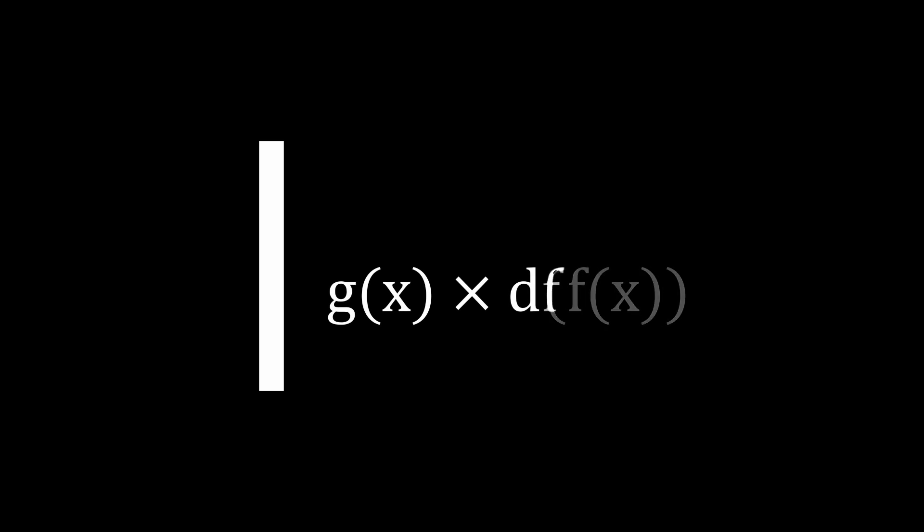As we shrink dx to 0, remember the limit, this square's area becomes 0 times 0, which of course is 0. It completely disappears and leaves us with two new rectangles. This one has lengths of f(x) and the difference in g(x) or dg, while this one has lengths of g(x) and the difference in f(x) or df.